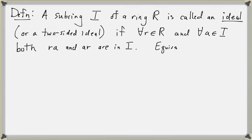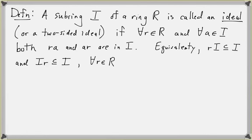Equivalently, we can write this as R·I ⊆ I and I·R ⊆ I, for any arbitrary element r in the ring. So an ideal I absorbs elements of R.